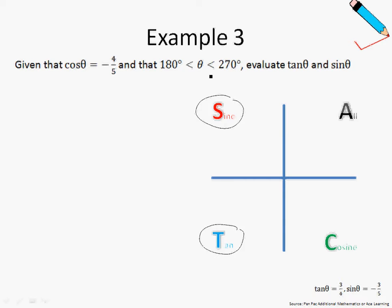Since it is given that θ is between 180 to 270 degrees, then we can conclude that we must be in the tangent quadrant. From this point to this point, it is 180 degrees and then from here onwards, it will be 180 to 270 degrees. Therefore, we can conclude that θ is somewhere over here. So this is my θ.